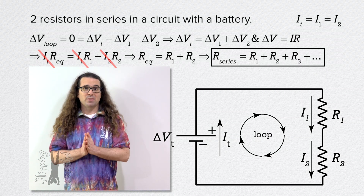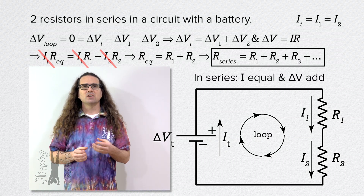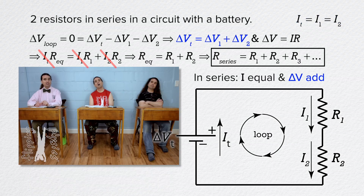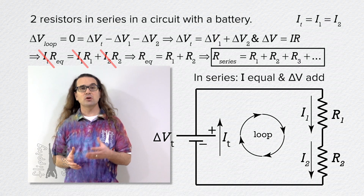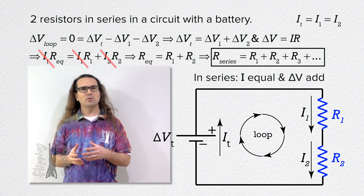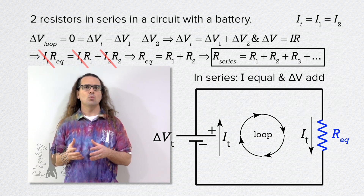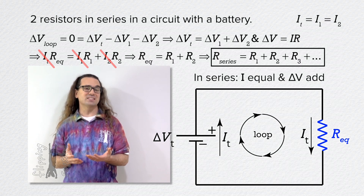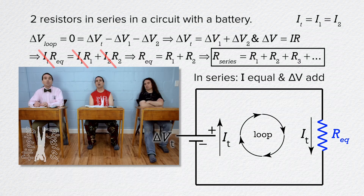Please remember that in series circuit elements, currents are the same and electric potential differences add. The term equivalent resistance means all the resistors in series could be replaced with a single equivalent resistor without affecting the current or potential differences in the rest of the circuit.